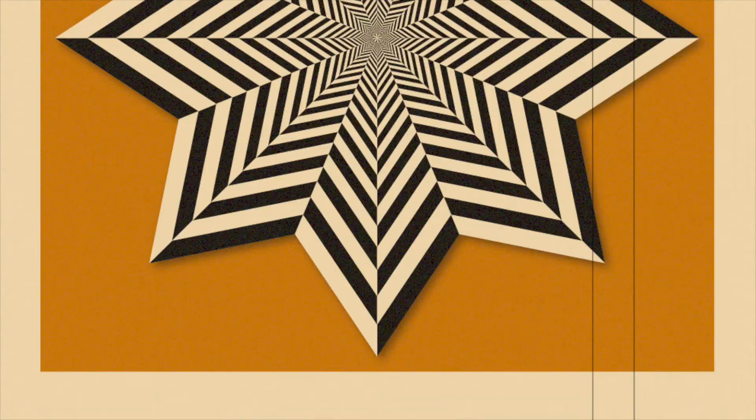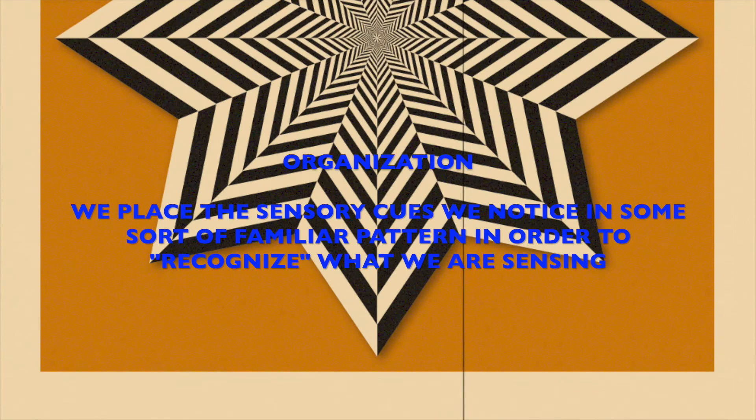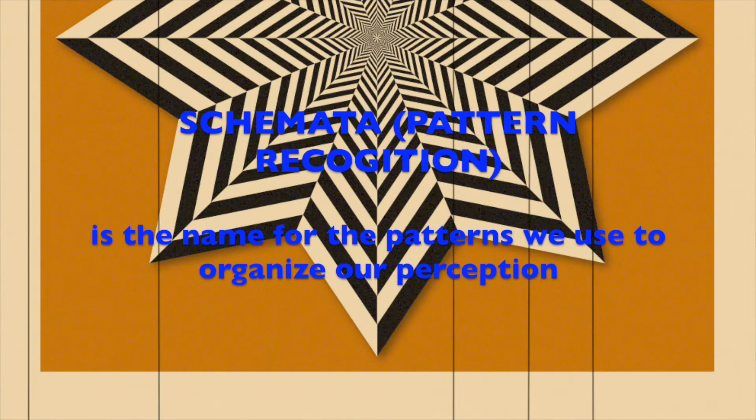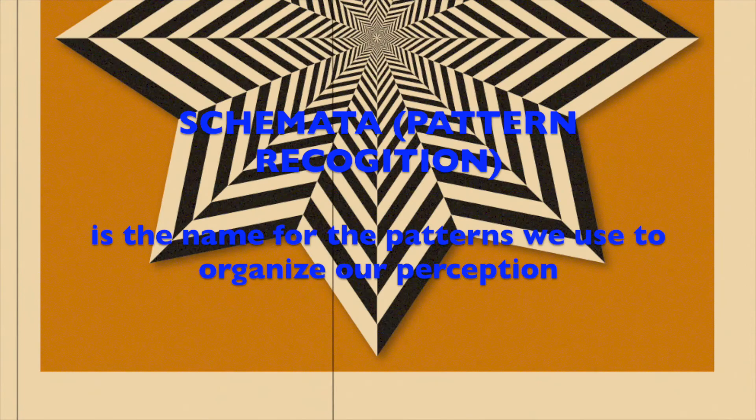Organization: we place the sensory cues we notice into some sort of familiar pattern in order to recognize what we are sensing. For example, the schemata — pattern recognition is the name for the patterns we use to organize our perception.